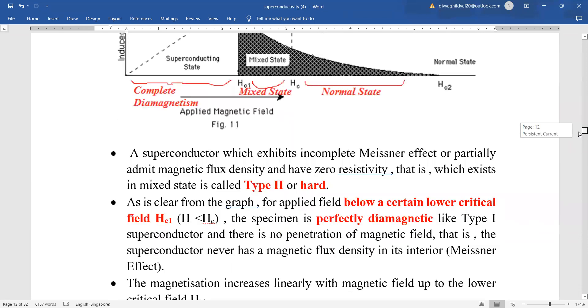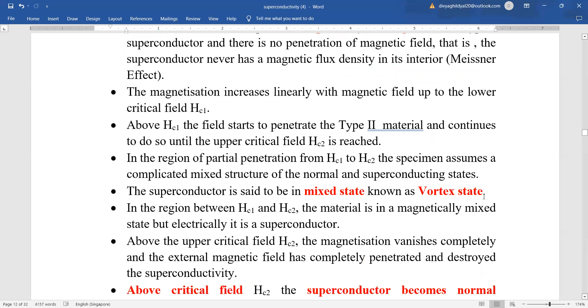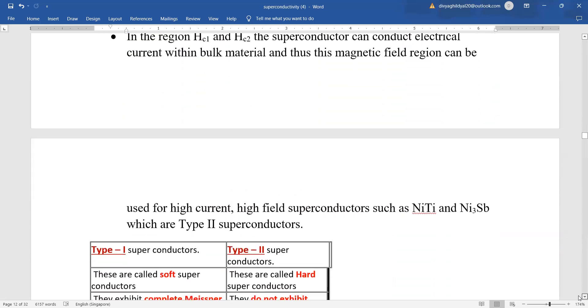A superconductor which exhibits incomplete Meissner effect till the time magnetic field is HC1 behaves like type 1. After that they start behaving in the mixed state manner and are known as type 2 or hard. Below a certain critical value they show complete diamagnetic or Meissner effect, above which they start behaving in a mixed manner and the state is known as mixed state or vortex state. Above critical field HC2 the magnetization vanishes completely and superconductor gets back to its normal state.